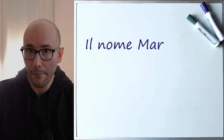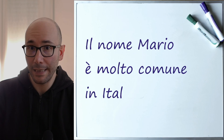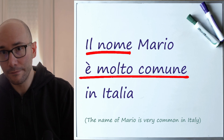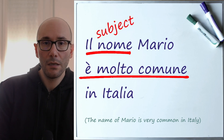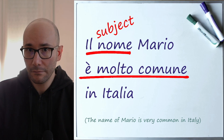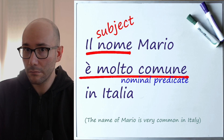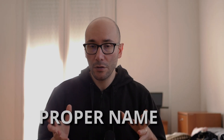Another example: the name of Mario is very common in Italy. Il nome Mario è molto comune in Italia. The subject is 'the name.' The verb to be is the predicate — a nominal predicate made by the adjective 'common.' We have a subject constituted by a common name, a predicate made by the verb to be, and a nominal predicate made by an adjective. Mario is a proper name which specifies the common name that precedes it, so it is the complement of denomination.